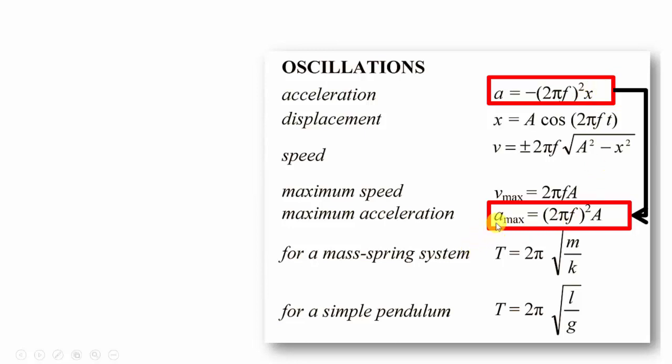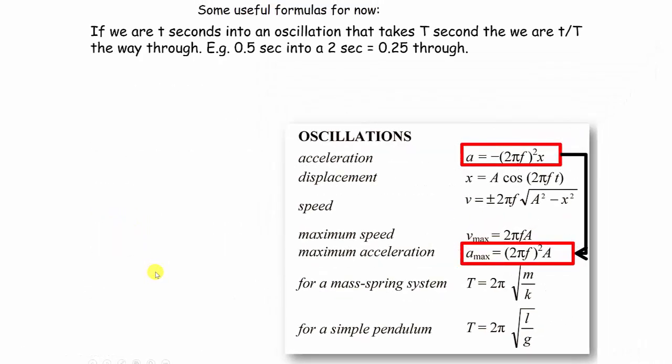Which will be when its displacement is maximum or the displacement is equal to the amplitude. We can get a few more as well out of this. If we are t seconds into an oscillation that takes T seconds, then t over T is how far through the oscillation we are. So if we're 0.5 seconds into a 2 second oscillation, we are 0.25 of the way through.